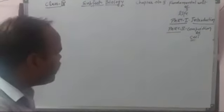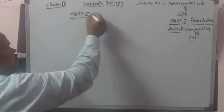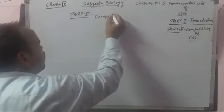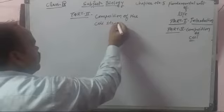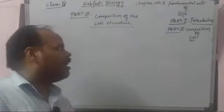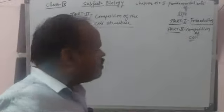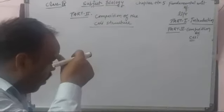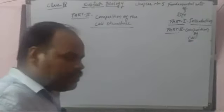Part 2 of this chapter is the composition of the cell structure. Robert Hooke was the one who first saw the cell and called it 'cell' or 'cellula,' as we discussed in the previous class. Now, regarding the composition of the cell: we know that all cells are made up of various types of particles.